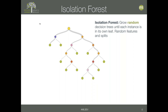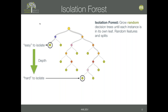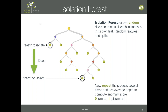Tom discussed isolation forests: the idea is growing random decision trees to separate each instance and seeing at what level the instance was isolated. If an instance is isolated at the top it's easy to isolate with a few splits. If it's hard to isolate it will be deeper in the tree. Based on the depth, an anomaly score is assigned — the higher the score, the more anomalous the instance.